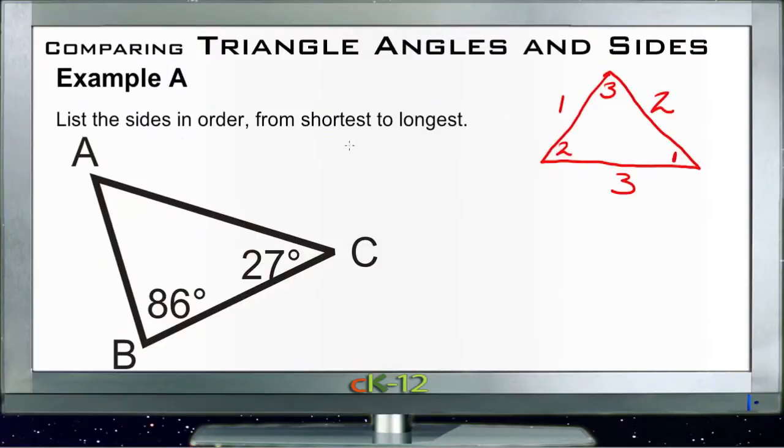Our first question asks us to list the sides in order from shortest to longest. Now we need to remember that a triangle always has a total of 180 degrees. Since we're missing this other angle over here, we have x degrees, so we know that 27 degrees plus 86 degrees plus x degrees is going to equal a total of 180.